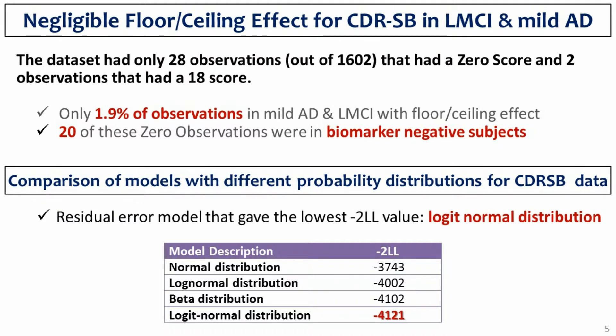Moreover, a comparison of models with different probability distributions suggested that the logistic normal distribution captured the behavior of the residual error appropriately. This residual error model has the advantage that the model predictions, even after accounting for residual error, stay within the boundaries of the scale.